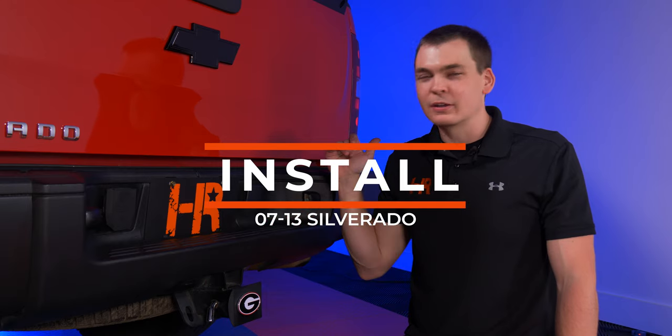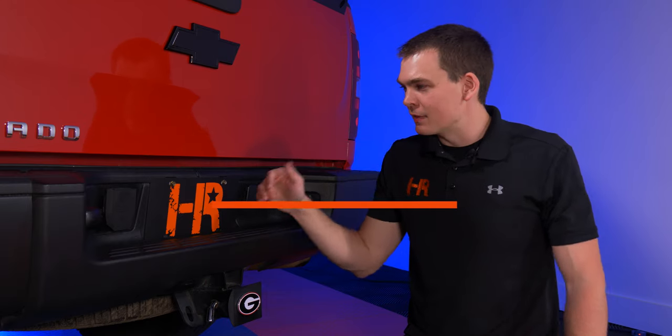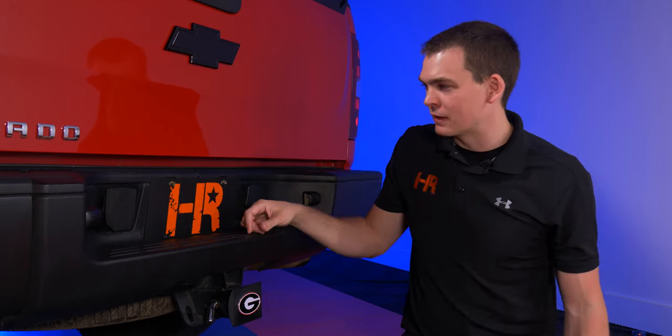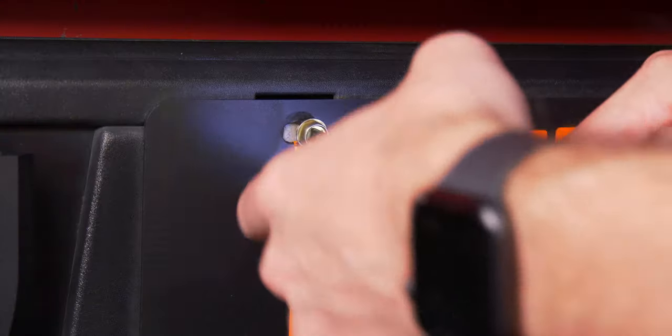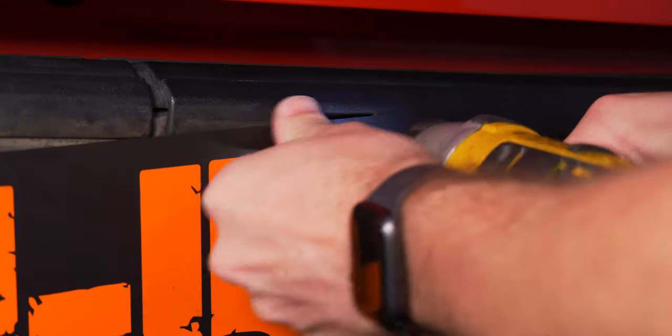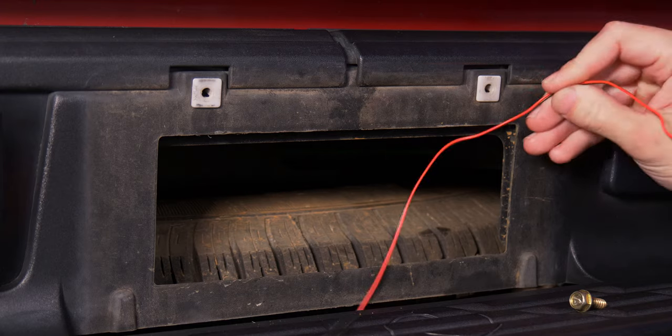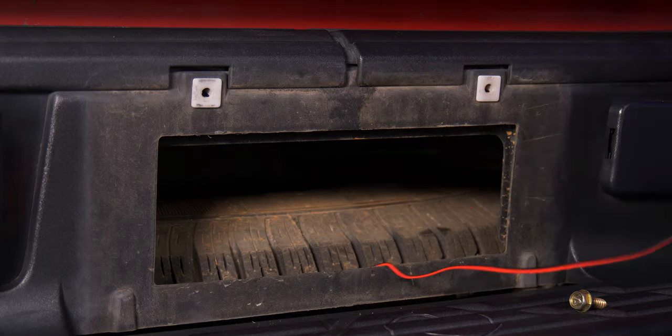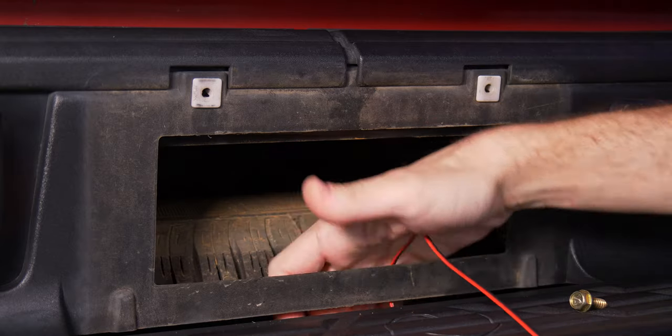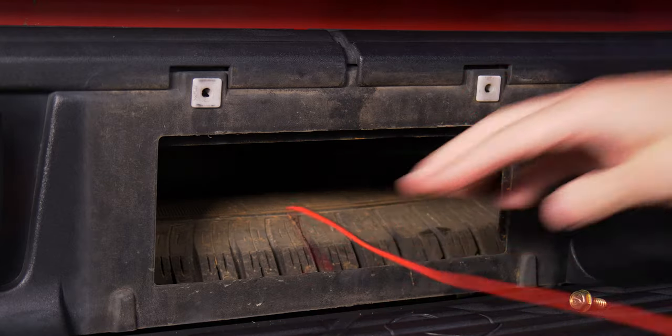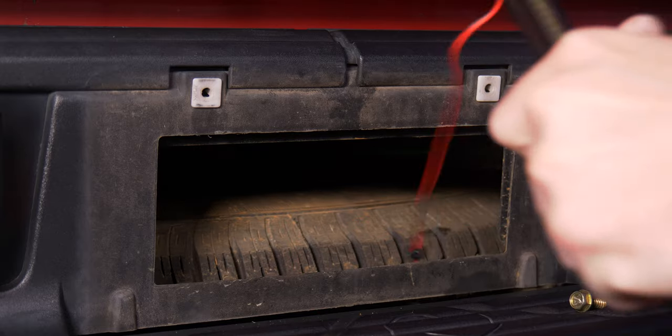Now the first thing we're going to be installing today is the license plate bracket from Xenon Depot, and it goes on extremely simply. On these Chevys, they've got two bolts here holding the license plate on. Go ahead and remove those. At this point, you can run the wiring through this opening here. It's nice these Silverados have such a large opening in the bumper you can pass the wiring through behind the license plate without drilling any holes. Pull the excess wire through.